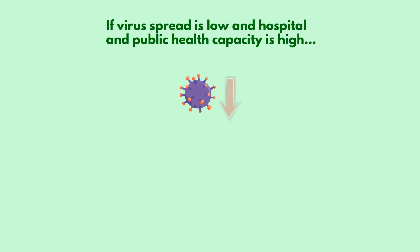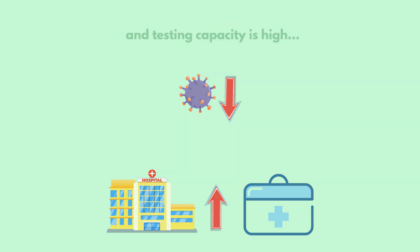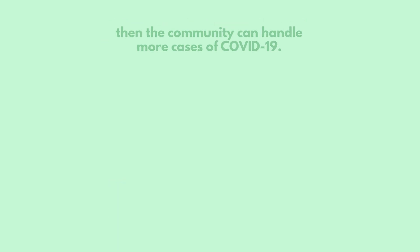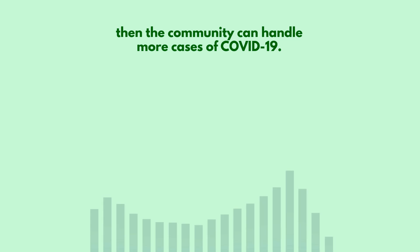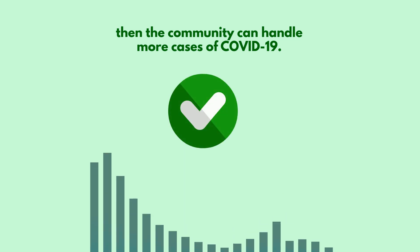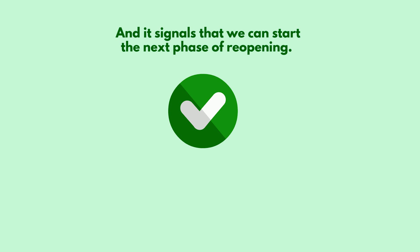If virus spread remains low, while both hospital and public health capacity is high and testing capacity is high, then the community is able to handle more cases of COVID-19. And this signals we can start the next phase of reopening.